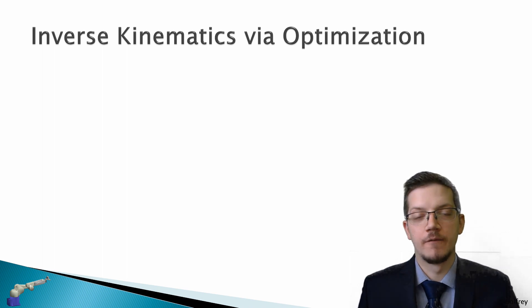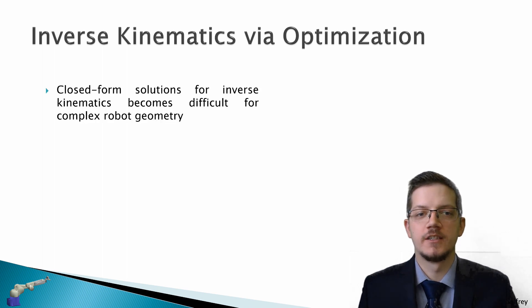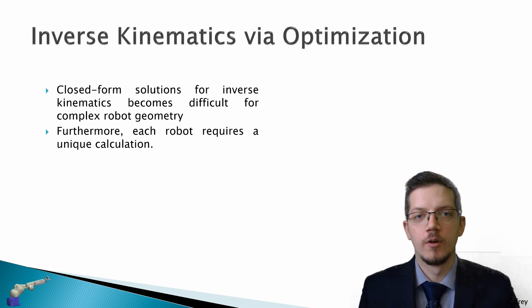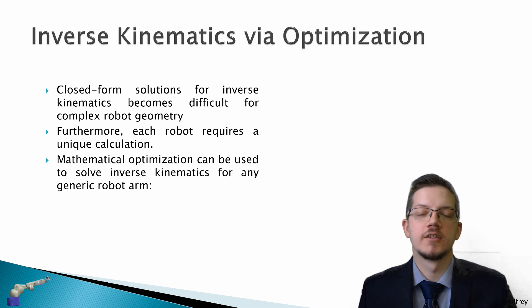In lecture 5.1 we covered closed form solutions and we saw that these solutions for inverse kinematics become very difficult for complex robot geometry. Furthermore, robots can have a unique inverse kinematics solution given their type of structure. Instead, we want to use mathematical optimization to solve inverse kinematics because this can be used for any generic serial link manipulator.